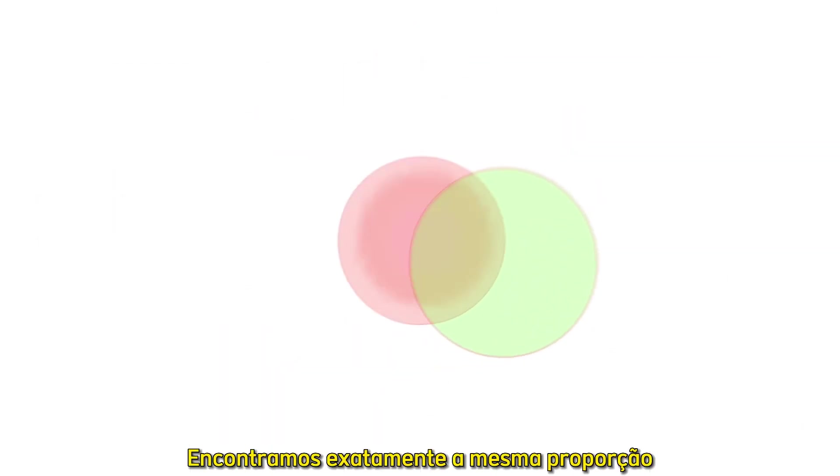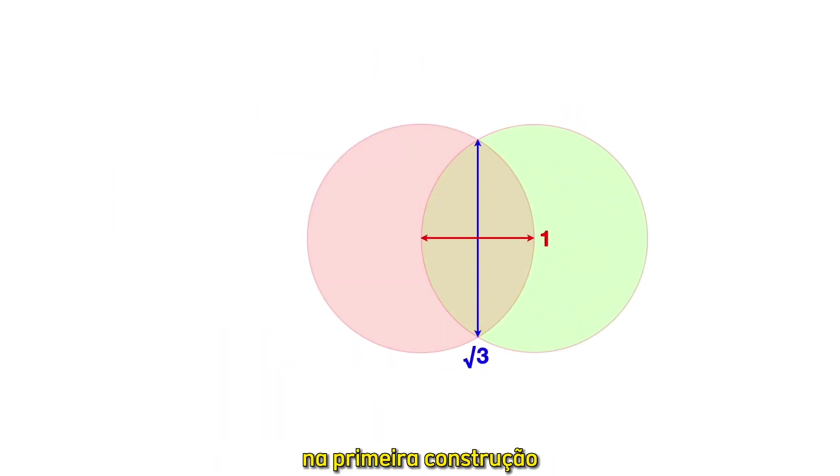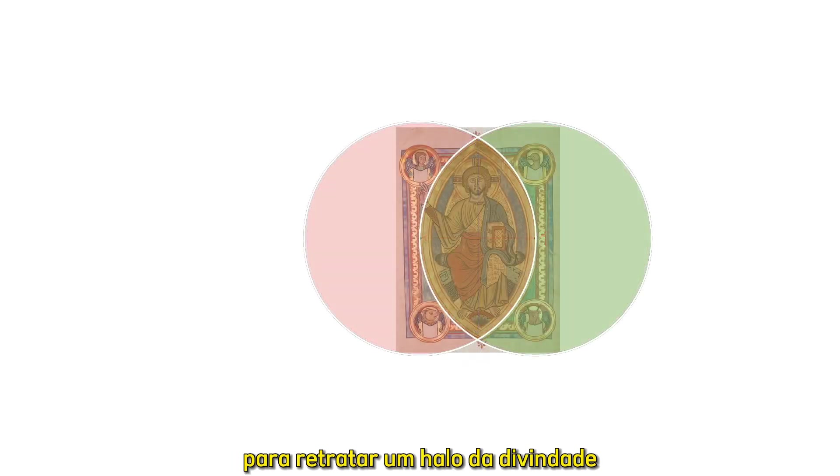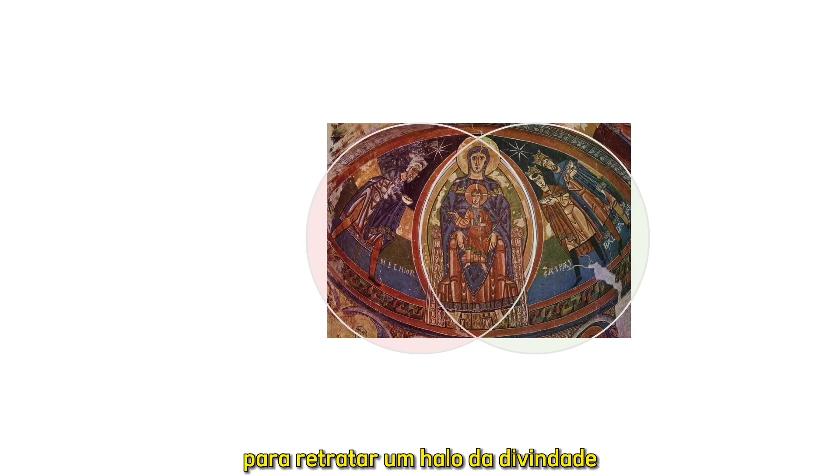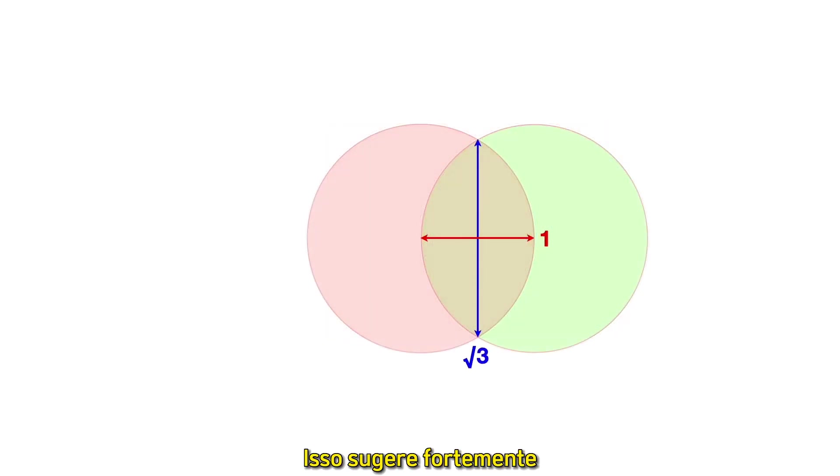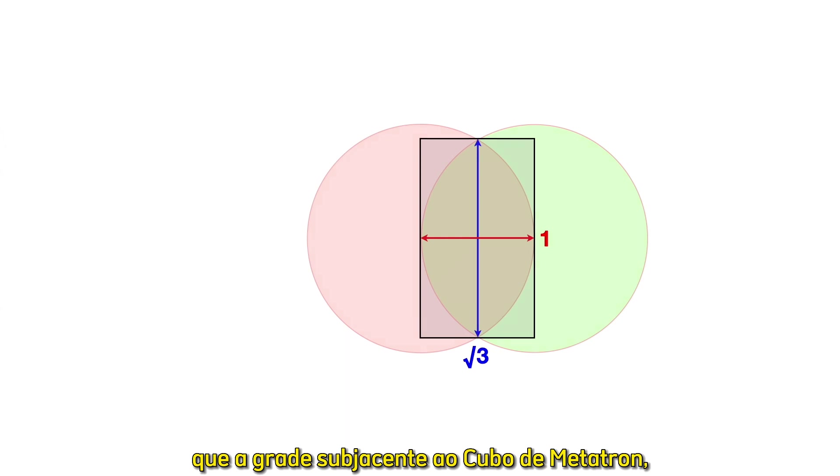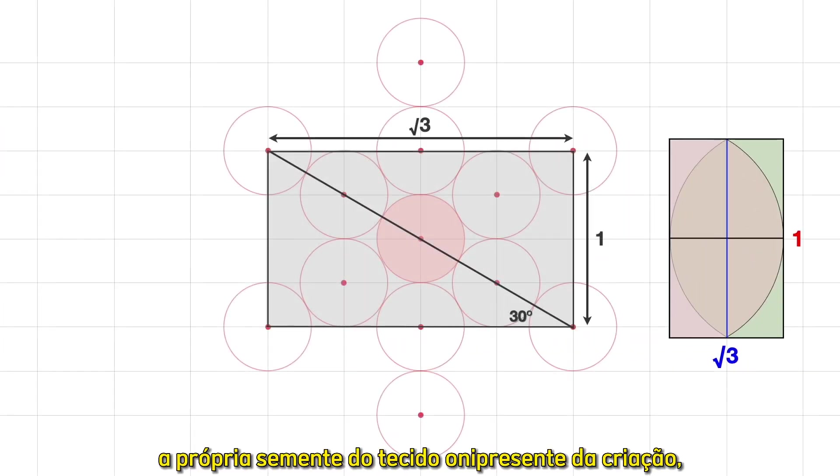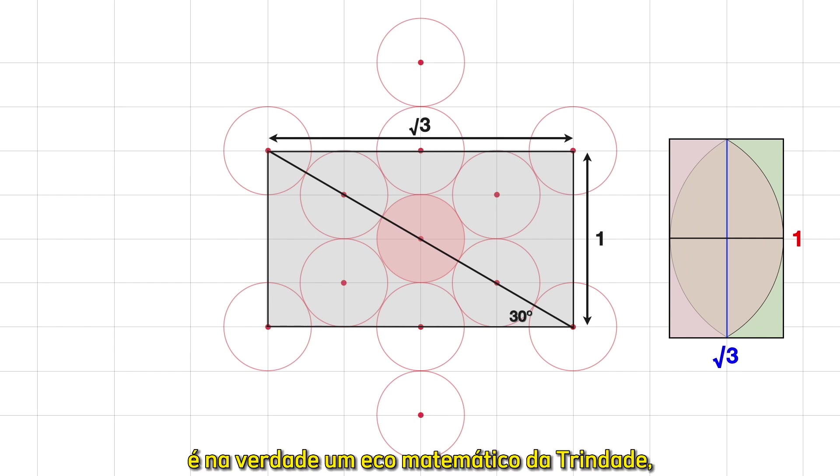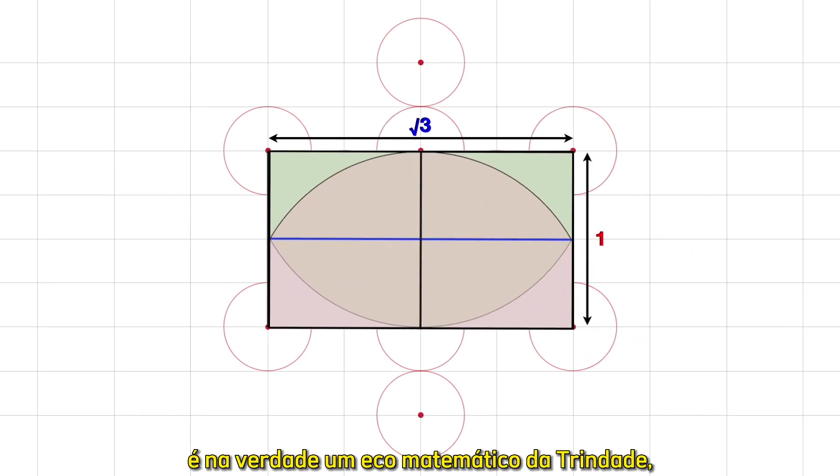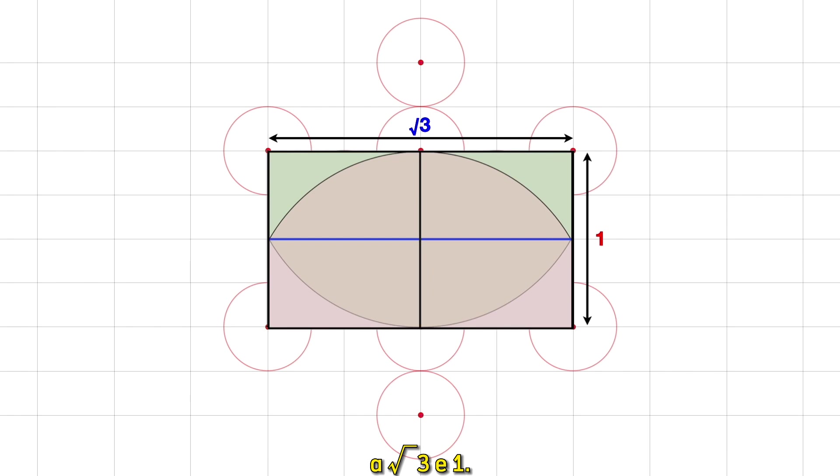We find the exact same proportion in the very first construction of Euclid's Elements, the Vesica Piscis, a sacred symbol used in medieval art to depict a halo of divinity around saints. This strongly suggests that the grid underpinning Metatron's cube, the very seed of the all-pervasive fabric of creation, is actually a mathematical echo of the Trinity - the root of 3 in 1.